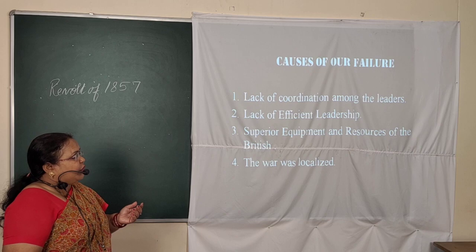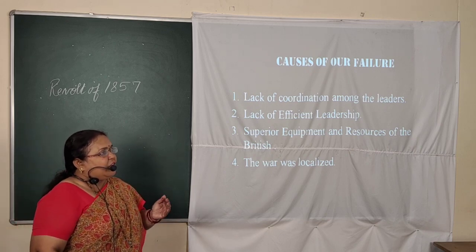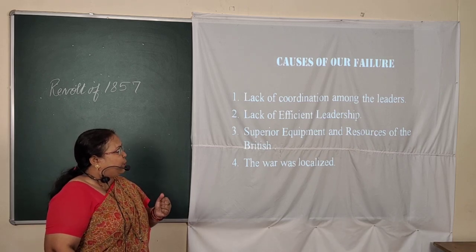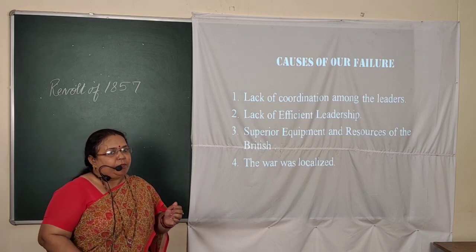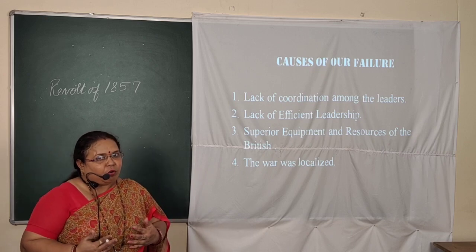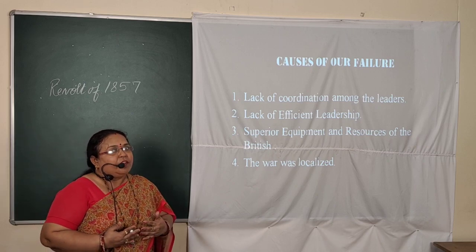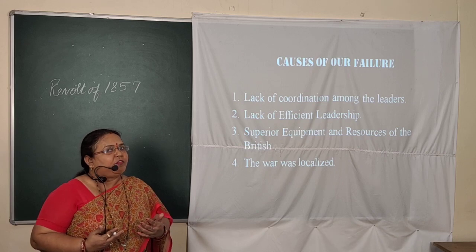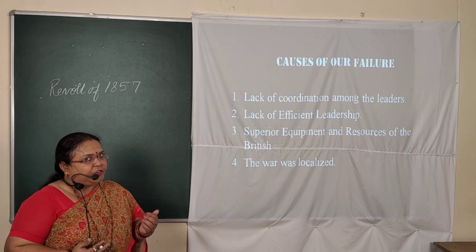After the revolt took place, the Indians were defeated. What were the causes of their failure? First, lack of coordination among the leaders. Though many emperors fought from different regions, they were not well coordinated and did not plan well. Second, lack of efficient leadership — the commanders were not as effective as compared to the British army.